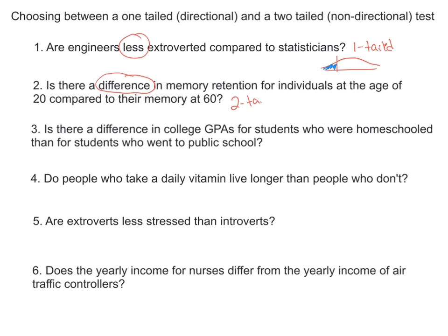Because what's happening is the researcher looks at the distribution, and their memory could be greater at one age versus the other, or their memory could also be worse or less at a certain age.